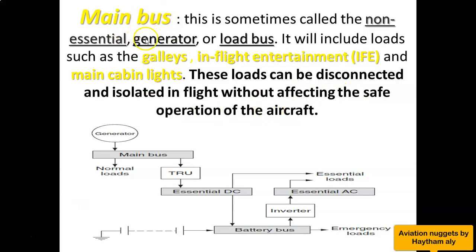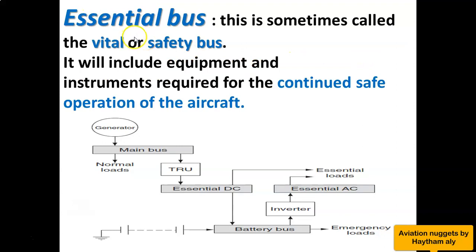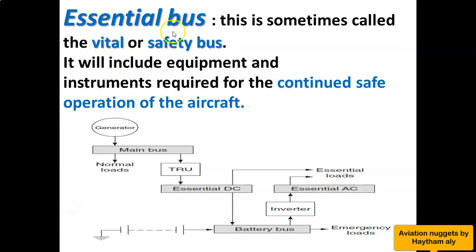What about the much higher rank bus? It is the essential bus, also called the vital or safety bus. It is called the vital or safety bus because the essential bus supplies essential loads, and these essential loads are needed for the continuous safe operation of the aircraft. The essential bus supplies the equipment and instruments required for the continued safe operation of the aircraft.